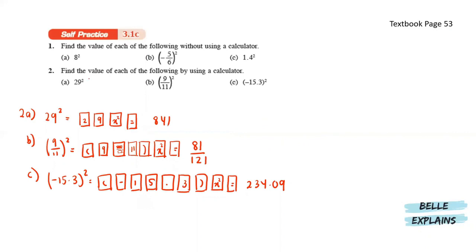Next for number 2, find the value of each of the following by using a calculator. This is how you put the numbers in your calculator to get the answer. For 29 squared, we have 2, 9, square equals, and you'll get 841. For B, we have bracket 9 over 12, close bracket, squared, equals gives us 81 over 121. And lastly for C, we have bracket negative 15.3, close bracket, squared, equals gives us 234.09.